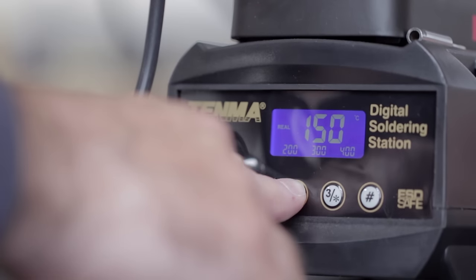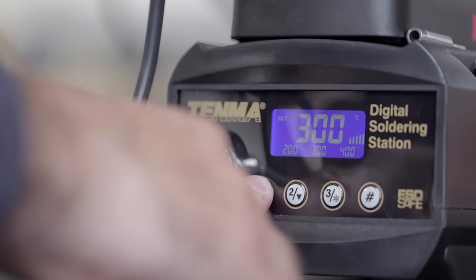If you're using a digital iron then set the target temperature to around 350 degrees C and wait for the iron to heat up.